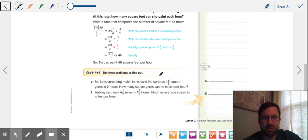So in this case, Mr. Ito is spreading mulch in his yard. He spreads four and two thirds square yards in two hours. How many square yards can he spread per hour? So we're going to take how much he spread. We're going to make it a fraction first. Four times three is 12 plus two is 14 divided by how long did it take? Two. We're going to keep change flip. And you get 14 over six.